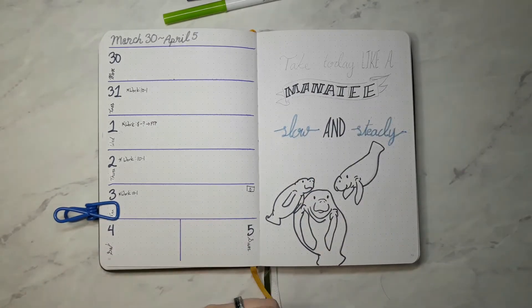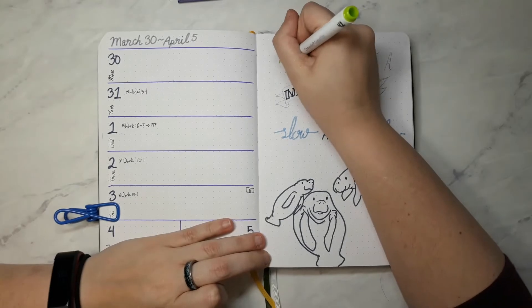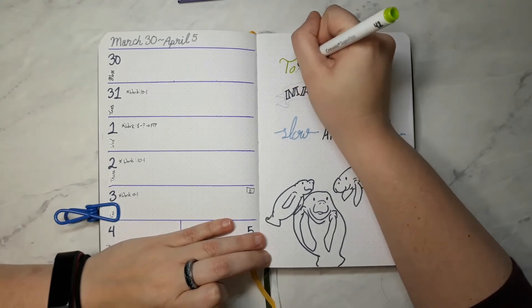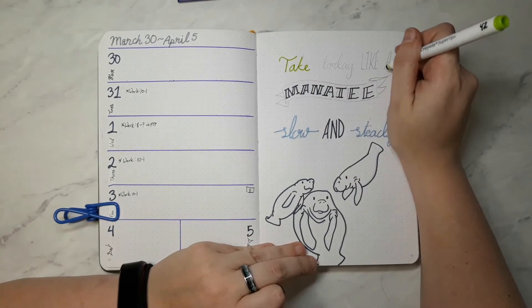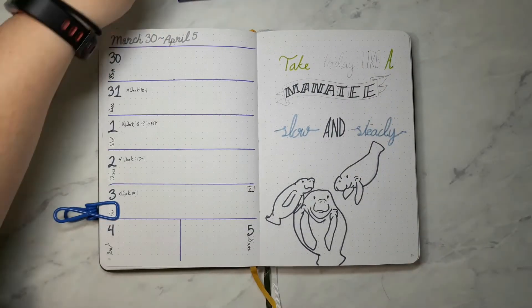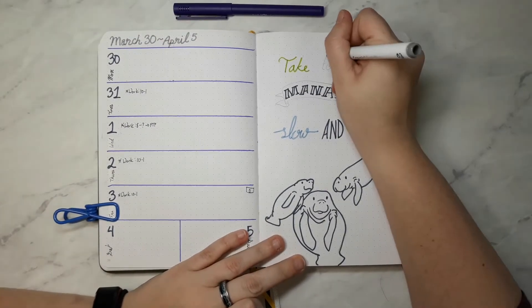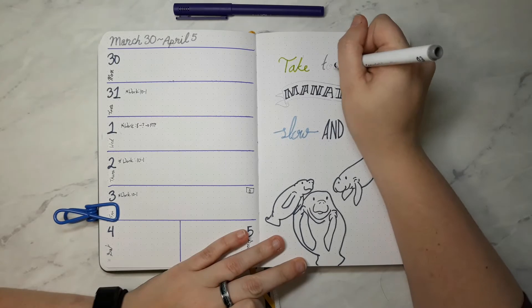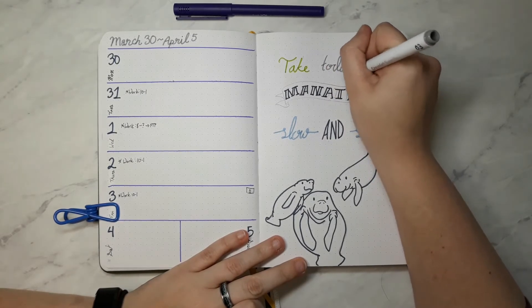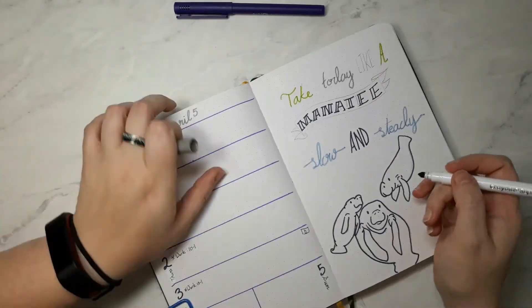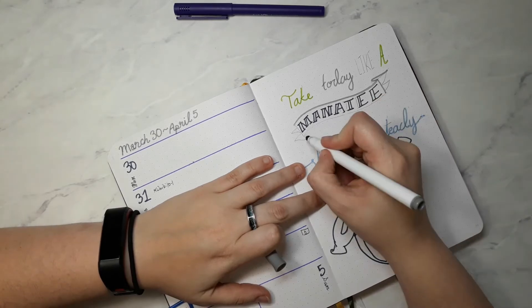I also had someone make a comment about the outline versus coloring the manatees. I do like the manatees just plain outlined, but I thought that made the page look a little too blank when I was originally setting up my spreads for April. Hence why they became colored gray.